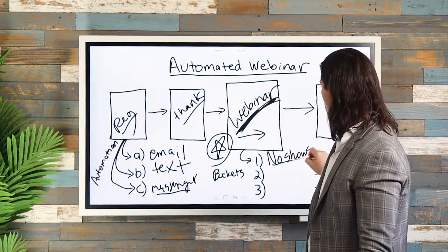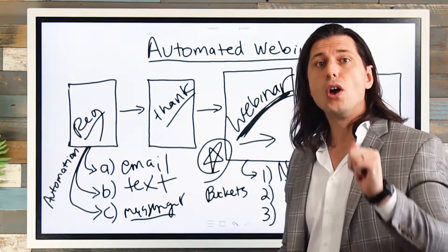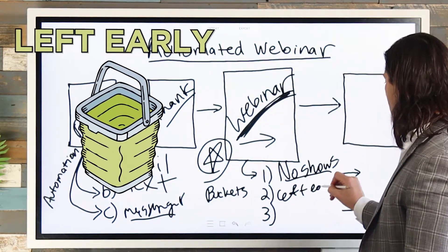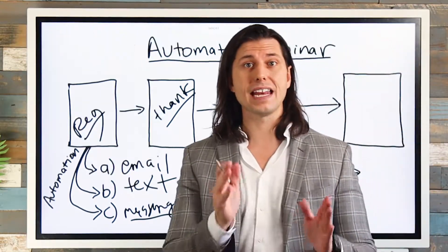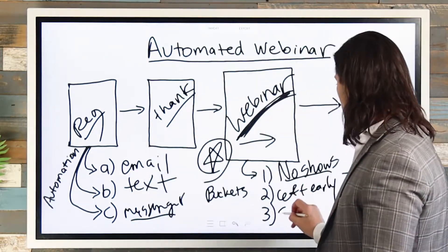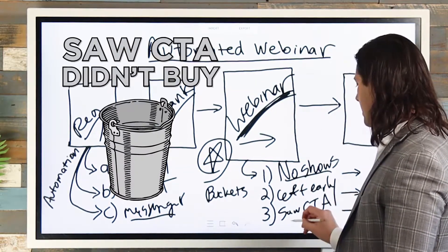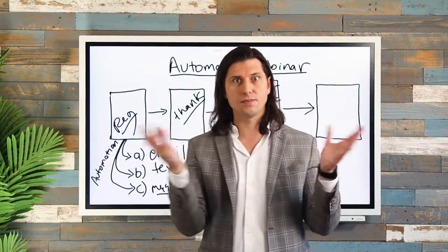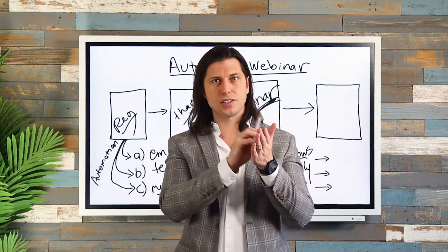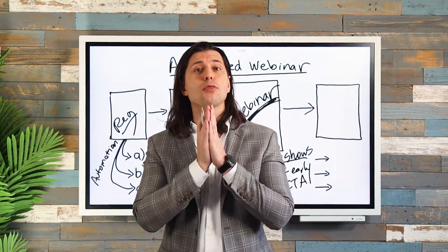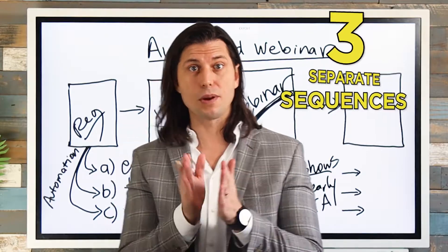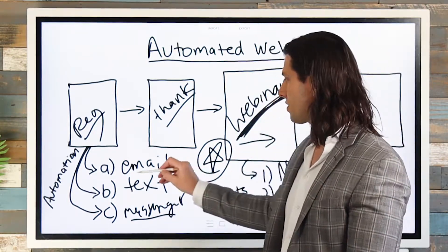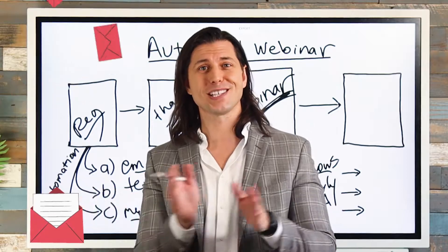Once they go to your webinar, the no-shows are the first group, the second group are those who come but leave before the call to action, and the third group are people who saw your CTA but didn't buy. Now you've got three separate sequences. We're going to use email, text, and Messenger — but even if you're just starting out, start with email. Imagine you've got three different email sequences that you're going to send people into.